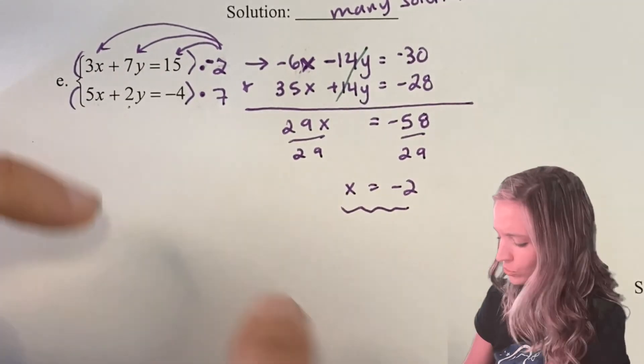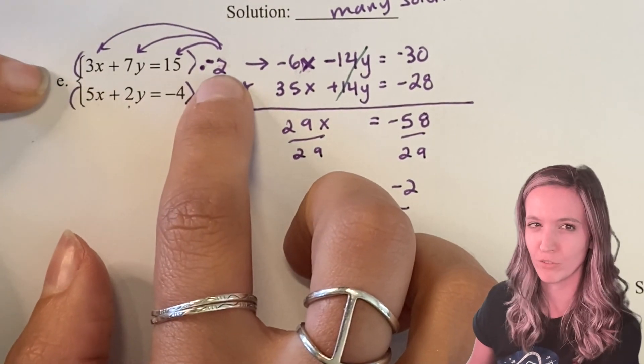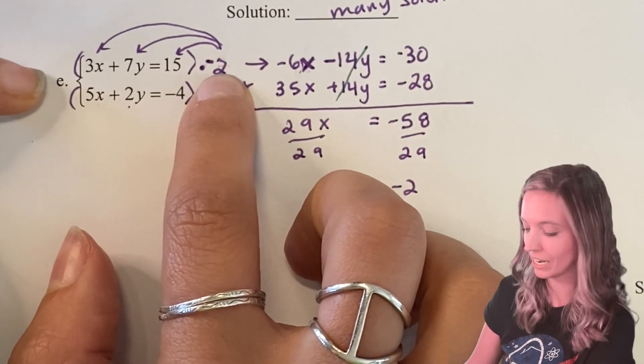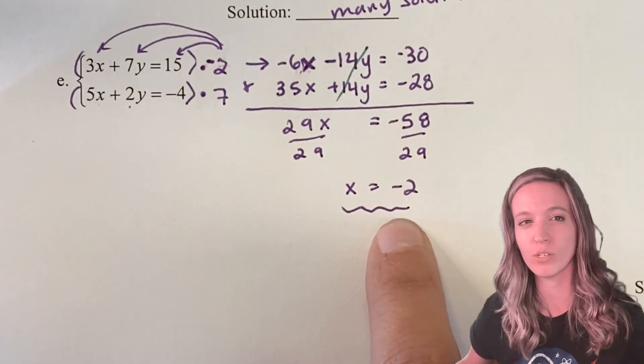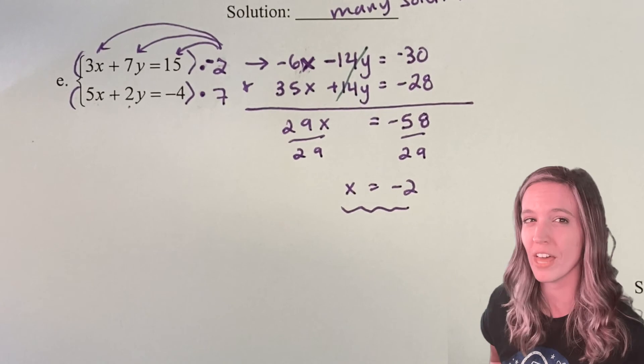I chose to eliminate my y's. So I multiplied my first equation by -2, because I wanted to be careful not to forget to multiply one by a negative. And then my second equation by 7. Looks like I ended up getting x = -2. And now I'm going to substitute that back in to solve for y.